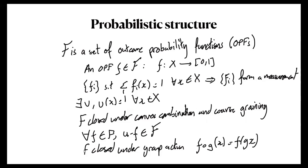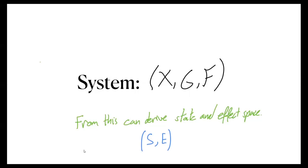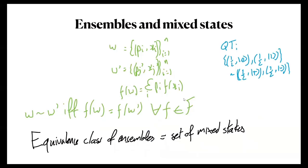So a system is a dynamical structure — a set X, a group acting on that set — and a set of OPFs. From this we can derive the state and effect space S and E. Every pure state will be mapped to an extremal state of the state space, every F in F will be mapped to an effect, and elements of the group will be mapped to linear transformations on S.